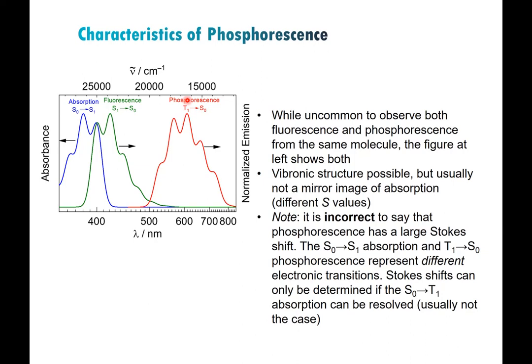One characteristic that helps distinguish fluorescence from phosphorescence: if you have a really large shift in wavelength between your absorption and your emission, that usually indicates phosphorescence. With fluorescence, there will at least be some overlap between the absorption and emission bands. That's one key indicator, but it's not the only thing to consider.